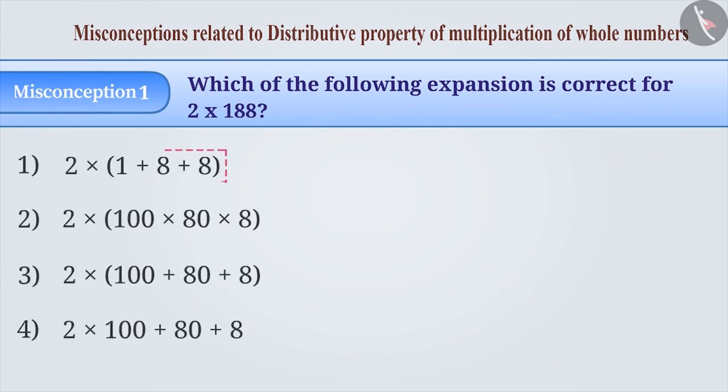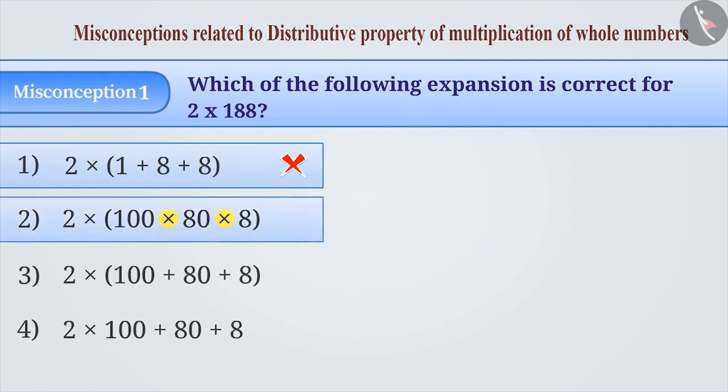Sometimes, distribution is understood as separating the digits, and option 1, which is an incorrect answer, is chosen. Similarly, instead of adding the digits, they are multiplied, and option 2, which is also an incorrect answer, is chosen.